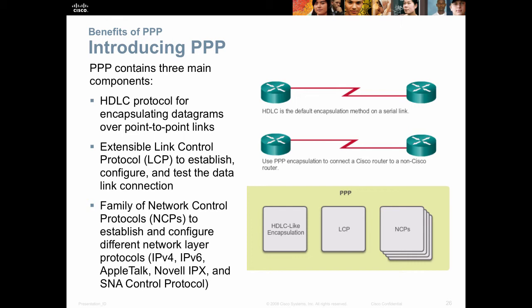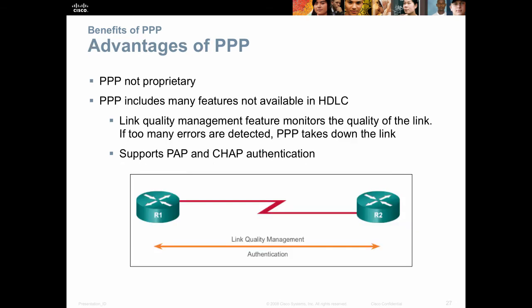LCP is a Layer 2 protocol controlling Layer 1 circuits. NCP is a Layer 2 protocol controlling the Layer 3 packets. PPP is an industry standard that can be used by any manufacturer. It has many features — one favorite is Link Quality Management. This allows you to set a threshold of errors so that if you get too many errors on the link, it'll hang up and reconnect.